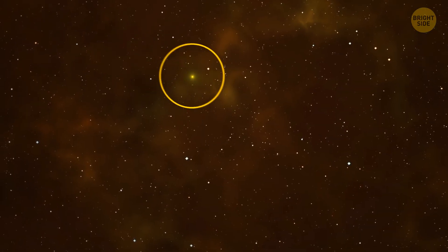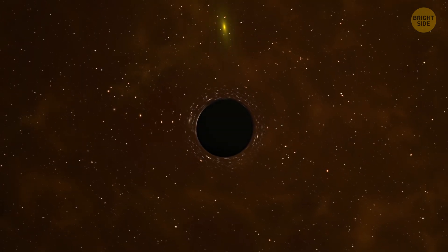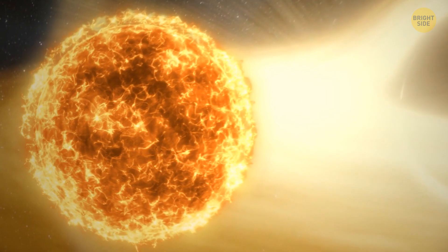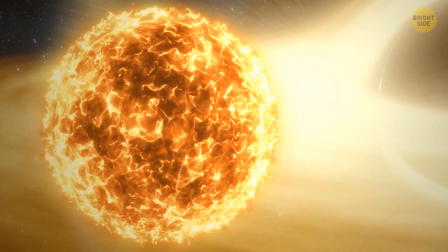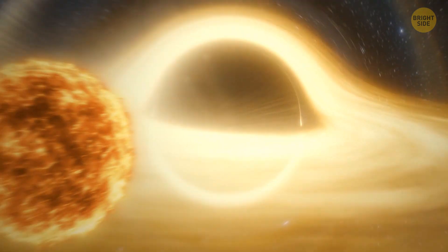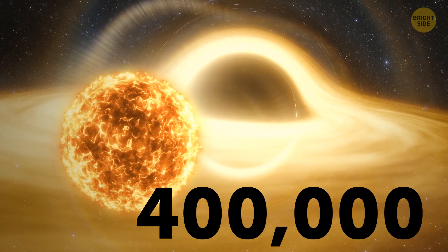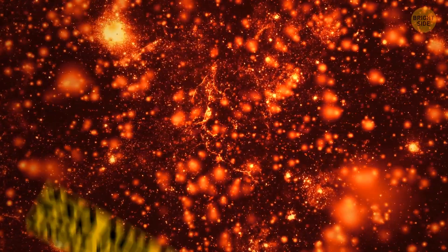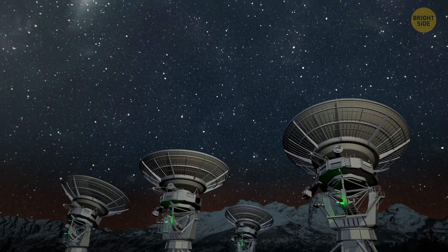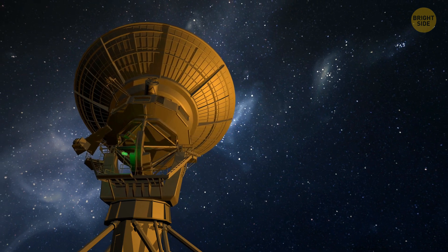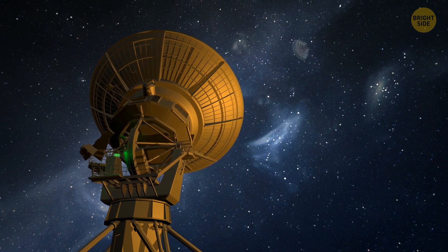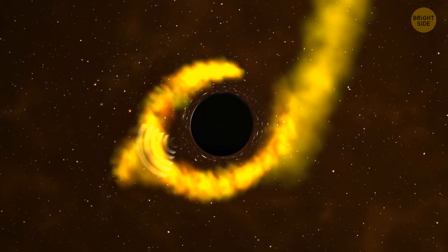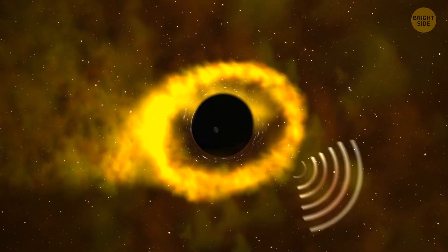For a star, running into a black hole normally ends in a spectacular light show and its destruction. Just one star that astronomers know of managed to survive an encounter with a black hole as heavy as 400,000 suns. It happened in a galaxy about 250 million light-years away from Earth. Astronomers with really powerful equipment noticed bursts of X-rays that raged in space every nine hours.